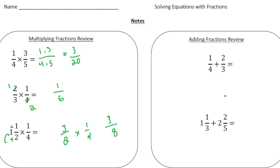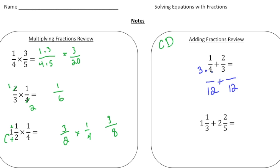Now adding fractions is a little bit more tricky, because we need to have common denominators. Write down CD for common denominators. So here we have one-fourth plus two-thirds, so we need to rename these with common denominators. The least common multiple of four and three is 12, so our new denominator is going to be 12. The rule is you say four times what gives me 12 — that's three — and what you do to the bottom, you have to do to the top, so I'm going to multiply the one times the three, and that's going to be three-twelfths.